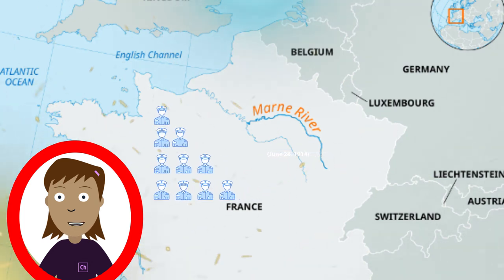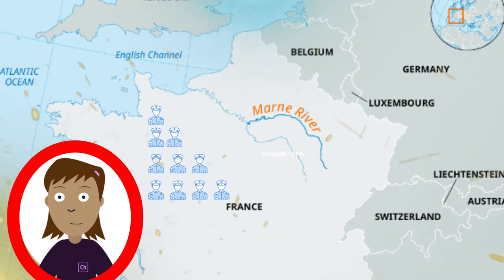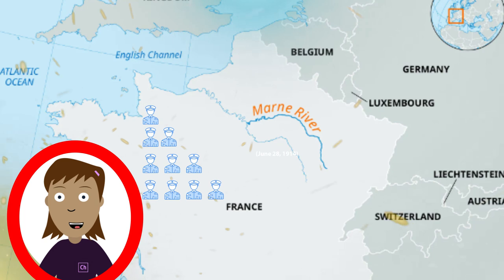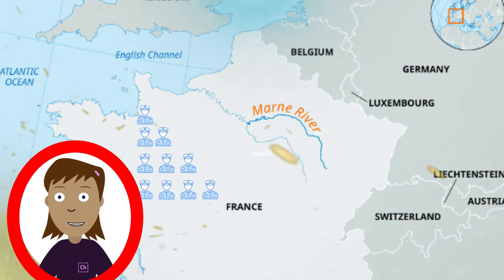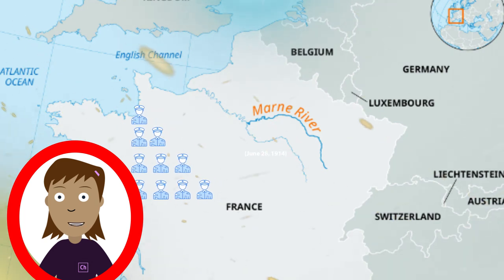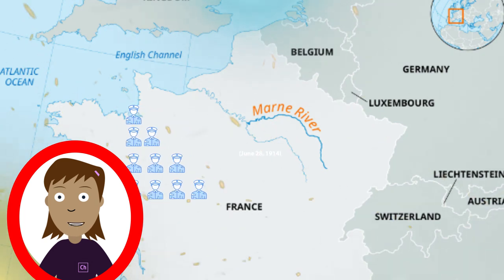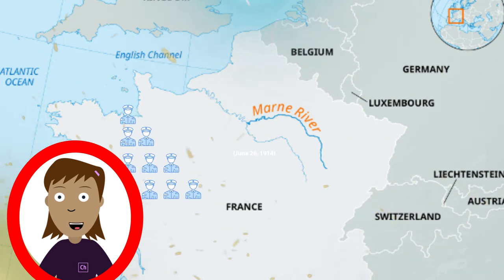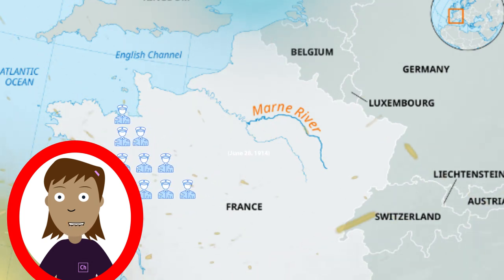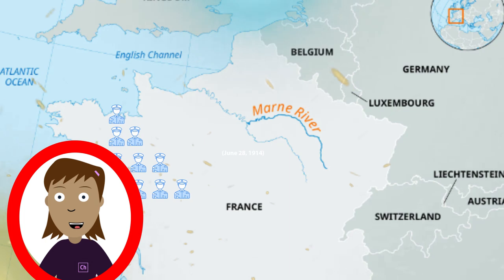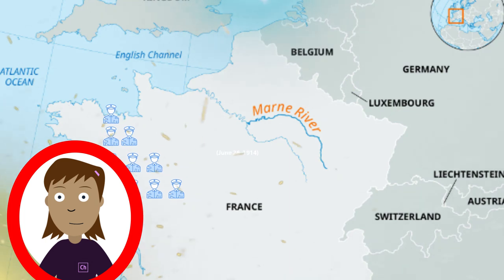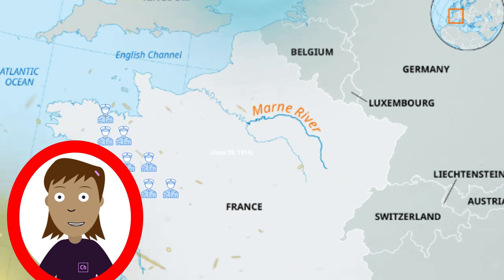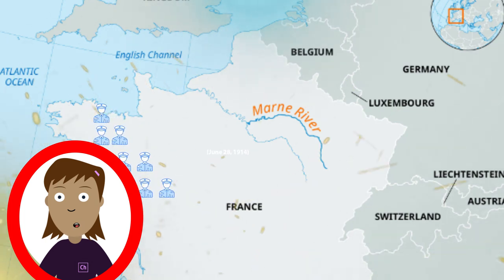Battle of the Somme, July 1 – November 18, 1916: known for its massive casualties, the battle took place in the Somme River Valley in northern France. It was notable for the use of tanks for the first time.